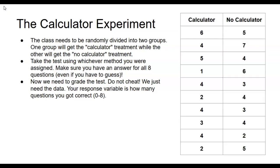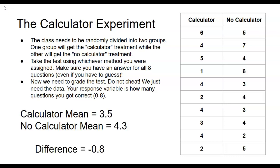Here is the data we collected. The mean of the calculator group was 3.5 and the mean of the no calculator group was 4.3. The no calculator group did better. The difference between the two groups was negative 0.8.